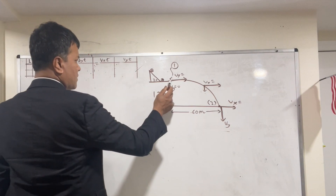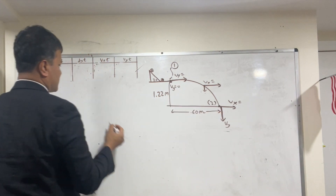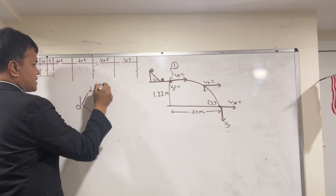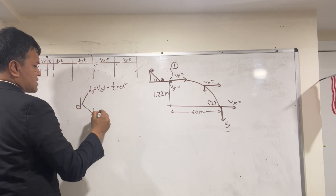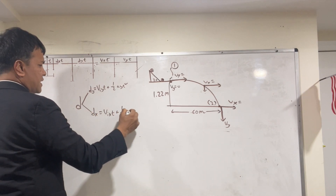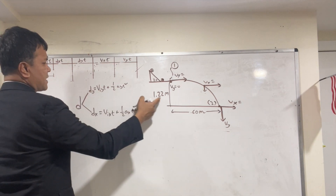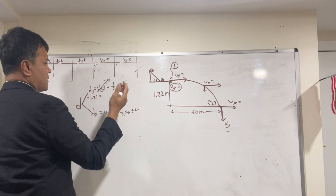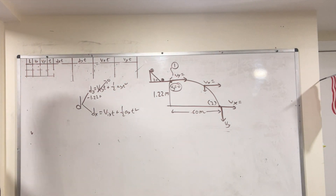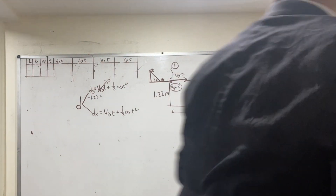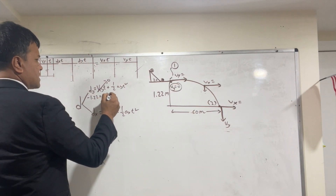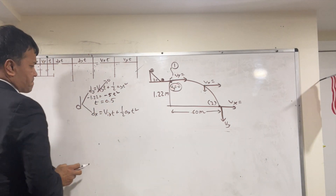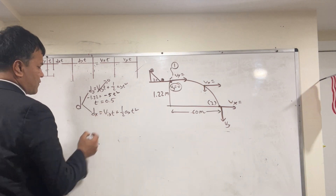To find time, we use the kinematic equation: dy = viy·t + ½·ay·t². In the y-direction: dy = −1.22 m, viy = 0, and ay = −10 m/s². Substituting: −1.22 = ½·(−10)·t², which gives t ≈ 0.5 seconds (more precisely 0.44 s, but we round to 0.5).